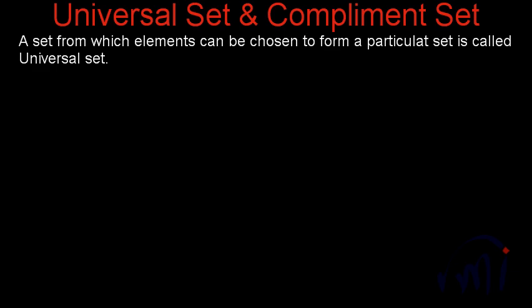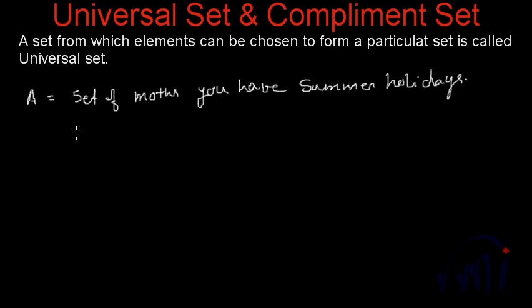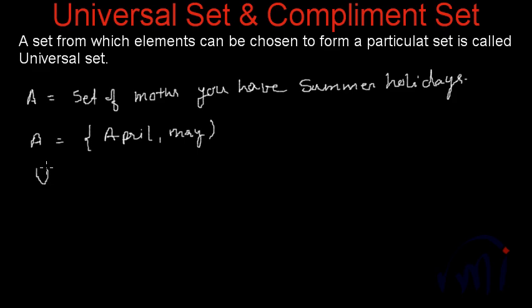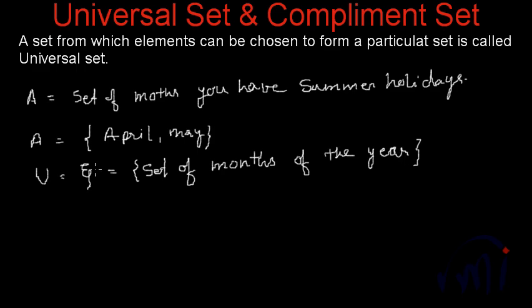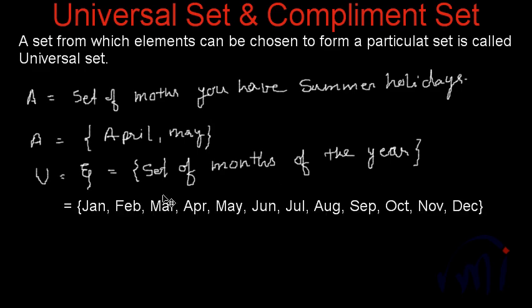Suppose if you are talking about a set A — A is equal to the set of months you have summer holidays. You have summer holidays in April and May. So this is the set A. If you go to some another country or to the southern part of the globe, the months on which they have summer holidays may vary, but they all will belong to the set of months of the year.